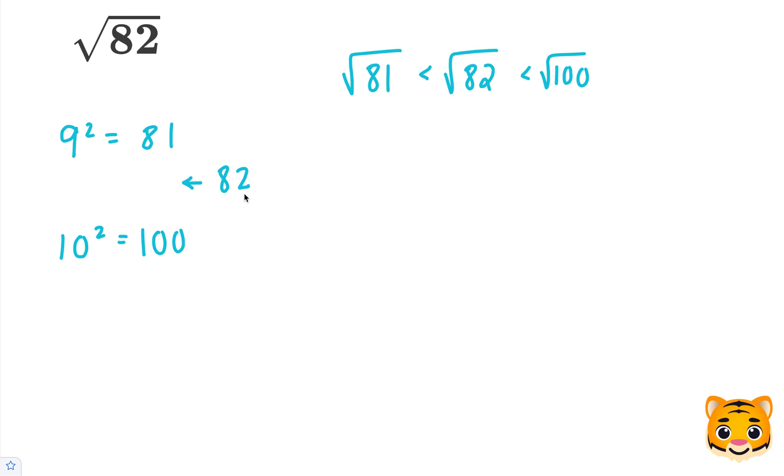Now we can simplify. The square root of 81 becomes 9, because 9 squared is 81. The square root of 100 becomes 10, because 10 squared is 100.